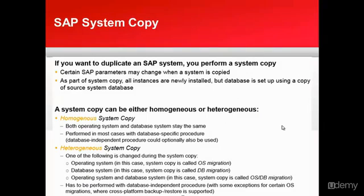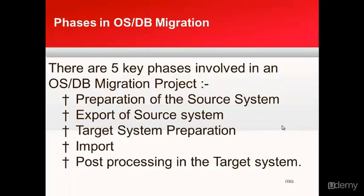There are two different system copy methods available. In the first, we keep the operating system and the database the same. In the second, we change either the operating system, the database, or both. There are five key phases involved in an OSDB migration project.